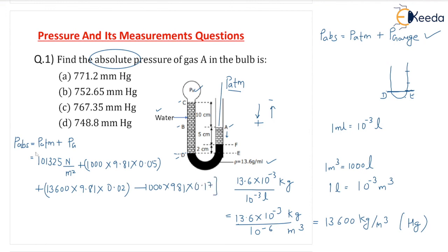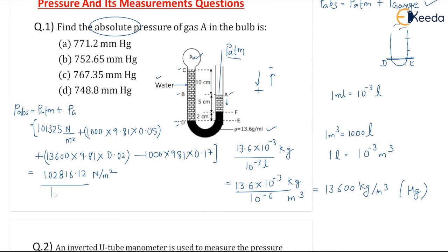This is the full equation. After calculation, we get 102816.12 Newton per meter square. To convert this into mm of Hg, we use the relation: 1 mm of Hg equals 133.3 Newton per meter square. So we divide 102816.12 by 133.3, and we get 771.3137 mm of Mercury.